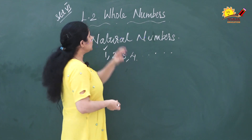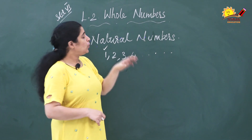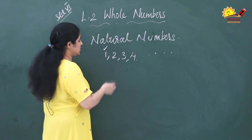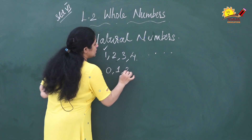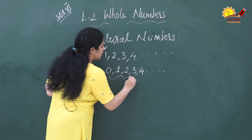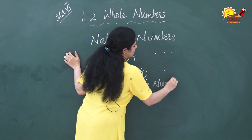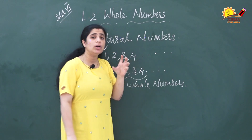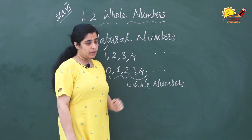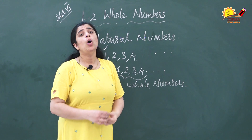Now we will see what are whole numbers. When we include 0 with the natural numbers — that is 0, 1, 2, 3, 4, etc. — these are known as whole numbers. So whole numbers = 0 plus natural numbers.